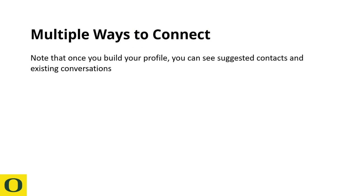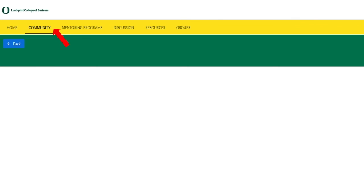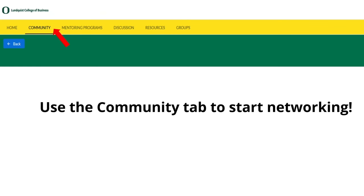On this platform, there are multiple ways to connect. Once you build your profile, you can see suggested contacts and existing conversations. The Community tab is what you'll use for networking. Discussion is where you can pose a question to the group or browse past discussions. Resources is where you can check out articles and tips to help you on your career journey. You would select Community to start networking.